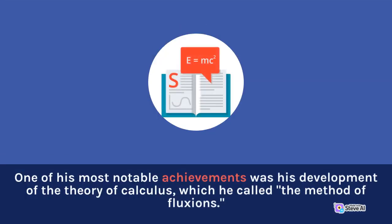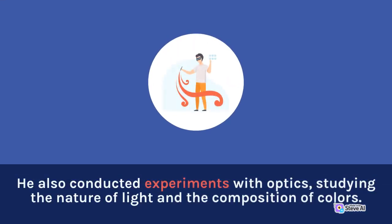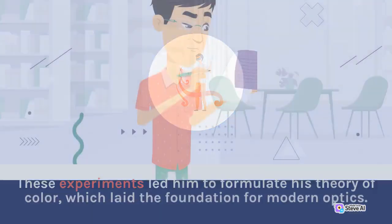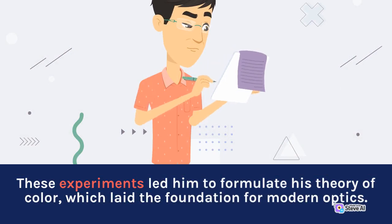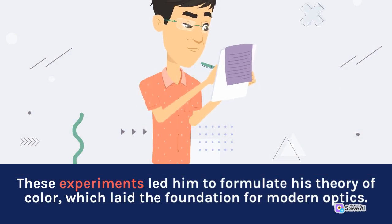One of his most notable achievements was his development of the theory of calculus, which he called the method of fluxions. He also conducted experiments with optics, studying the nature of light and the composition of colors. These experiments led him to formulate his theory of color, which laid the foundation for modern optics.